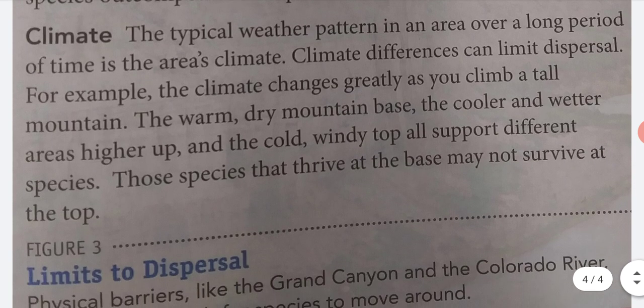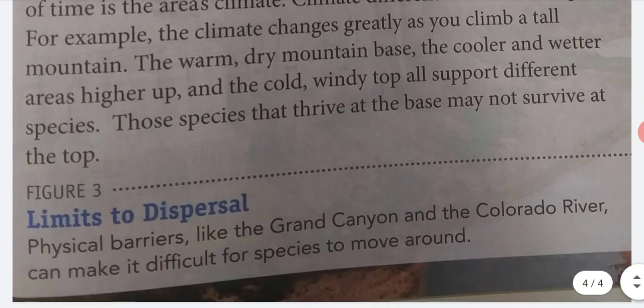Climate. The typical weather pattern in an area over a long period of time is the area's climate. Climate differences can limit dispersal. For example, the climate changes greatly as you climb a tall mountain. The warm, dry mountain base, the cooler and wetter areas higher up, and the cold, windy top all support different species. Those species that thrive at the base may not survive at the top.